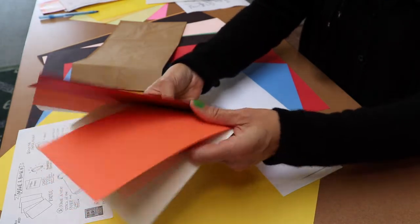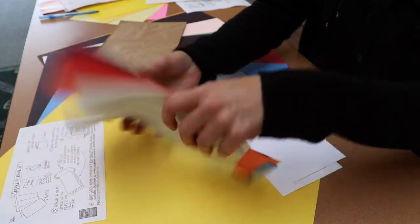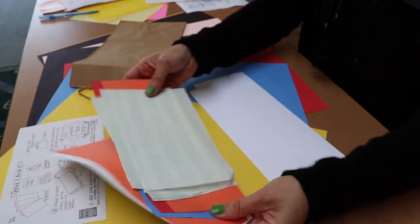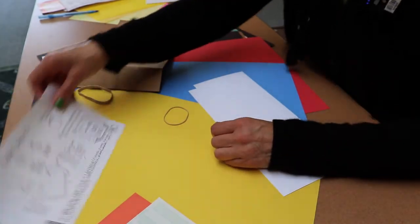And then look at that. Some different colored sheets of paper. Very interesting. That could make a very interesting looking book. Well, let's see what the instructions say.